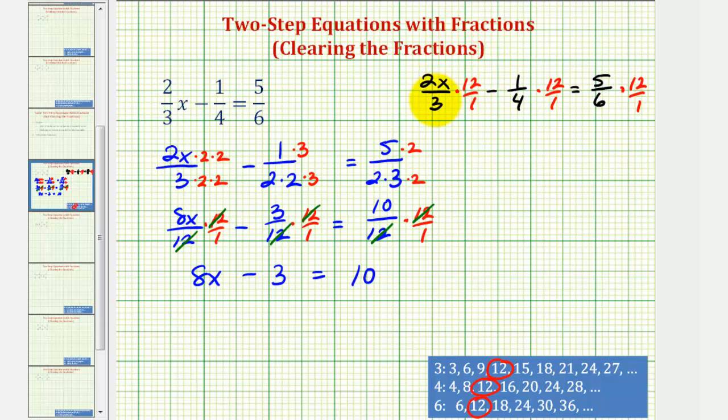Three and twelve share a common factor of three. There's one three in three, and four threes in twelve. Four and twelve share a common factor of four. It simplifies to one, this simplifies to three. And six and twelve simplify. There's one six in six, and two sixes in twelve.